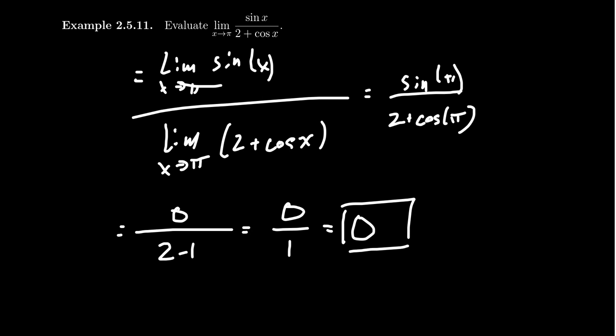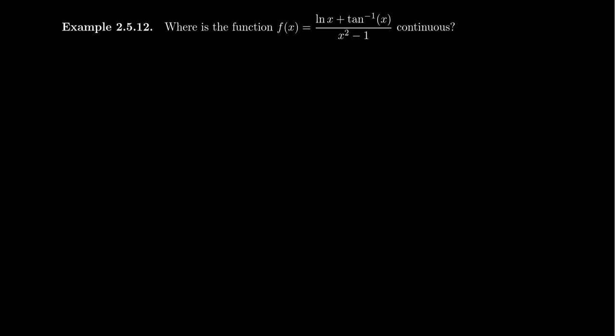We can use the fact that combining continuous functions algebraically — using addition, subtraction, multiplication, and division — means we can compute the limits of these things by direct substitution. Now consider the function f of x equals the natural log of x plus arctangent of x, divided by x squared minus 1. Where is that function continuous? Notice the numerator: the function natural log plus arctangent will be continuous so long as both natural log and arctangent are continuous — we take the intersection of their domains.